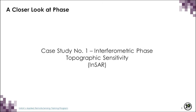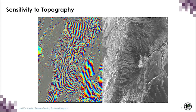The first case study is the use of the interferometric phase to generate digital elevation models — sensitivity to topography using InSAR. The image on the right is an amplitude image, and the one on the left is an interferogram of the same region utilizing two SAR images. Interferograms are characterized by having what looks like contour lines. These fringes relate to the topography of the surface.